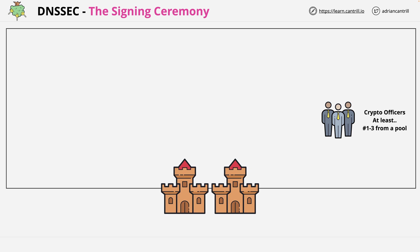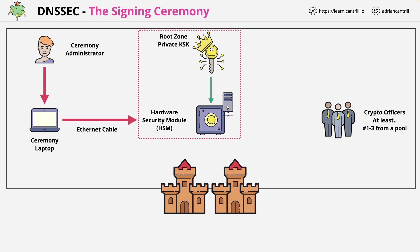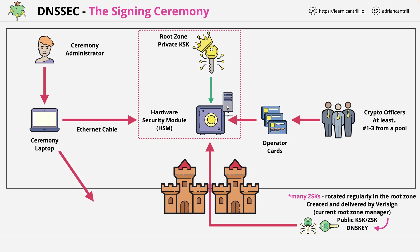The most important part of the whole process hardware-wise is the Hardware Security Module, or HSM, which contains the root zone private key signing key. This device can only be interacted with via the ceremony laptop, which is connected to the HSM over Ethernet, and is only operated by the ceremony administrator. The laptop has no battery and no storage — it's designed to be stateless and only used to perform the ceremony and not store any data afterwards. The HSM device can only be used when crypto officers use their allocated cards. What's being signed are the public key signing key and zone signing keys — actually a pack of them to allow for rotation between this ceremony date and the next. The HSM device via the ceremony laptop then outputs the signatures for these keys, which become the DNS key RRSIG records for the DNS root zone.